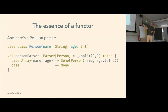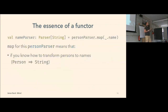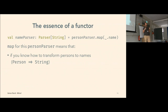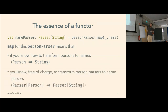What does map for this type mean? Well, if I have a parser of a Person and I map this parser to convert the resulting person to a string, this says that if I know how to transform persons to strings, then I know — free of charge — how to transform person parsers to name parsers. And this is a pretty cool property of the functor that lets us translate plain functions to fancy functions.